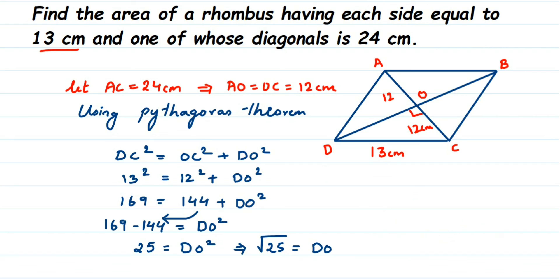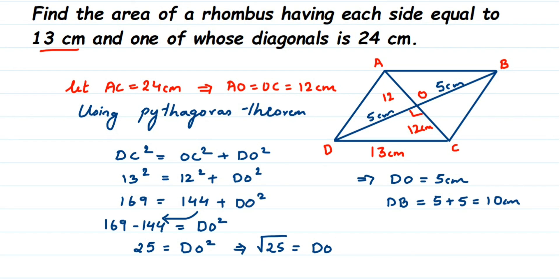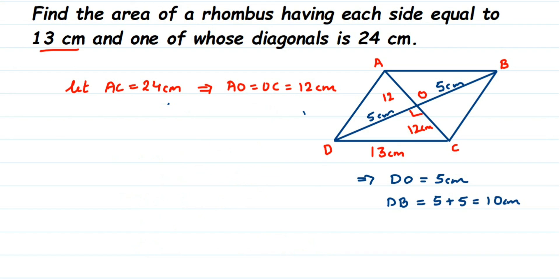Therefore DO = 5 cm, which means OB = 5 cm as well, because diagonal DB is bisected at O. So DB = DO + OB = 5 + 5 = 10 cm. Now we have the lengths of both diagonals: AC = 24 cm (given) and DB = 10 cm (calculated). Let us find the area of the rhombus.